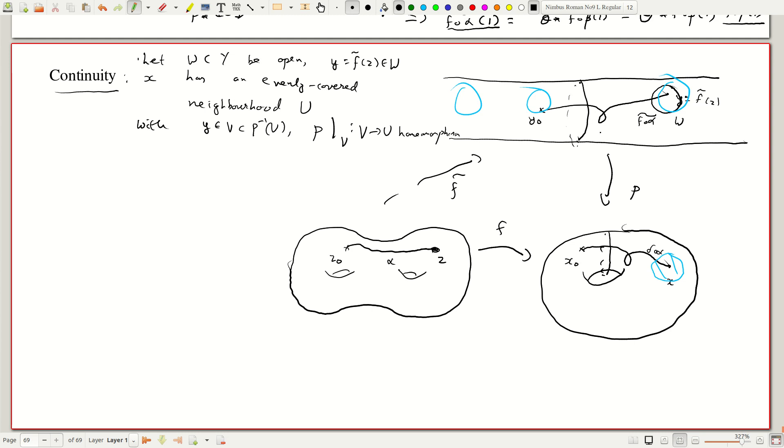So now this is a point which contains v. So without loss of generality, we can say w is contained in this evenly covered neighborhood.